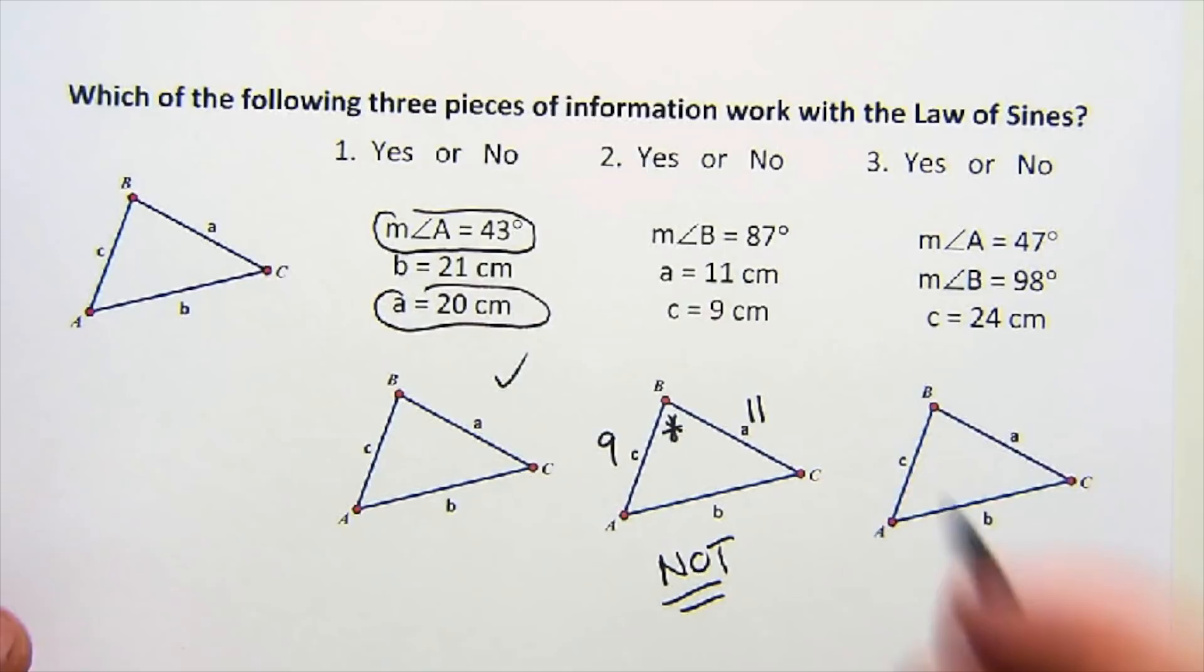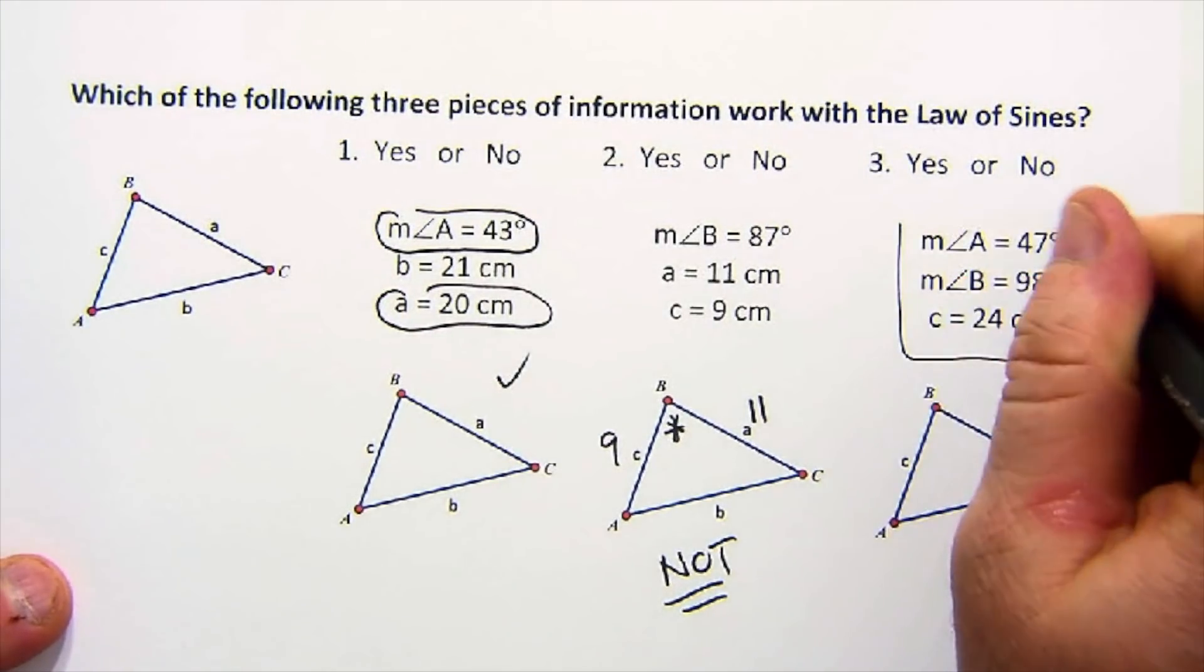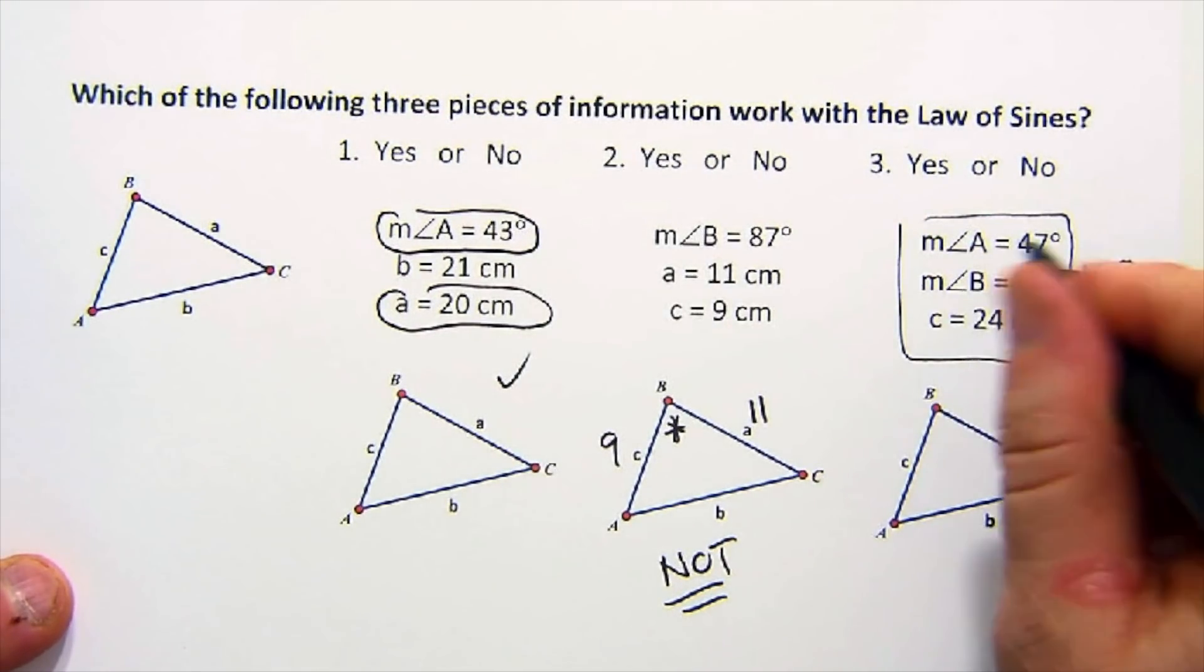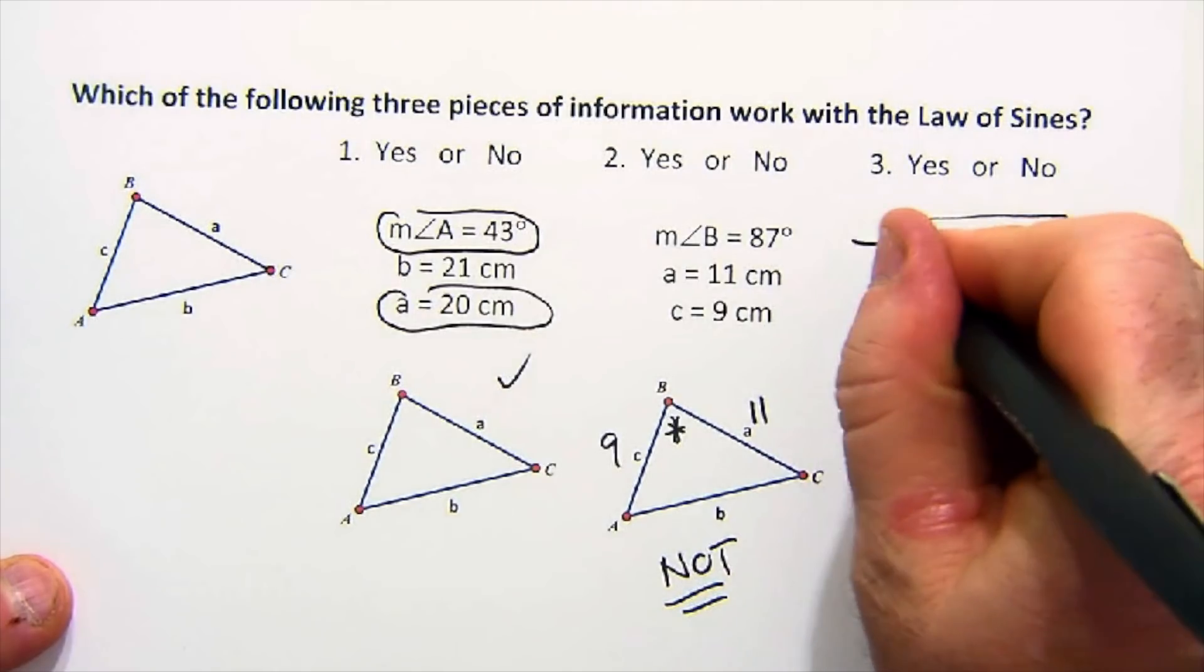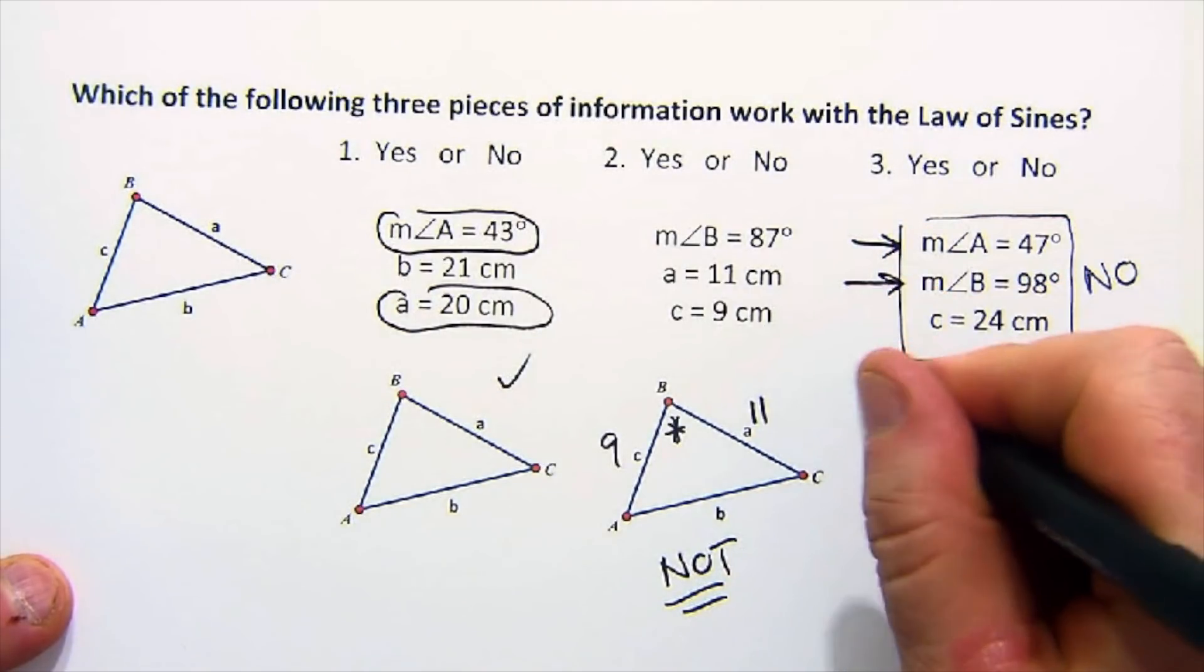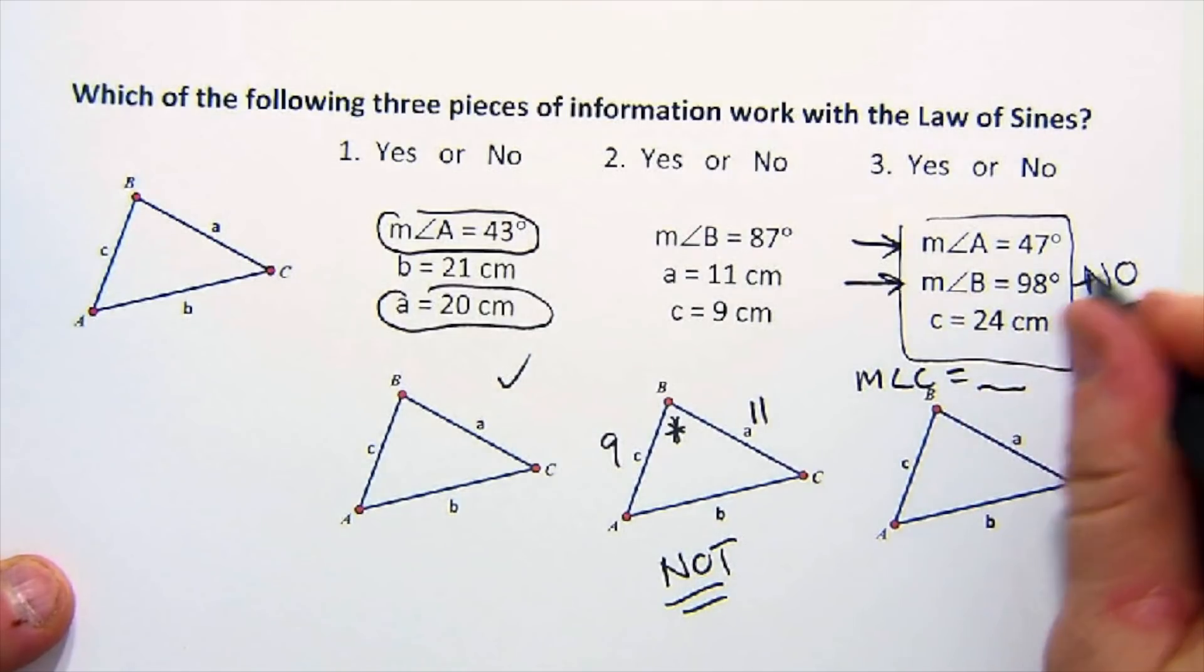I would always caution you that like this one students want to say no because they don't see the pairing. But remember if you have two angles you can always find the third. So this would be a yes answer.